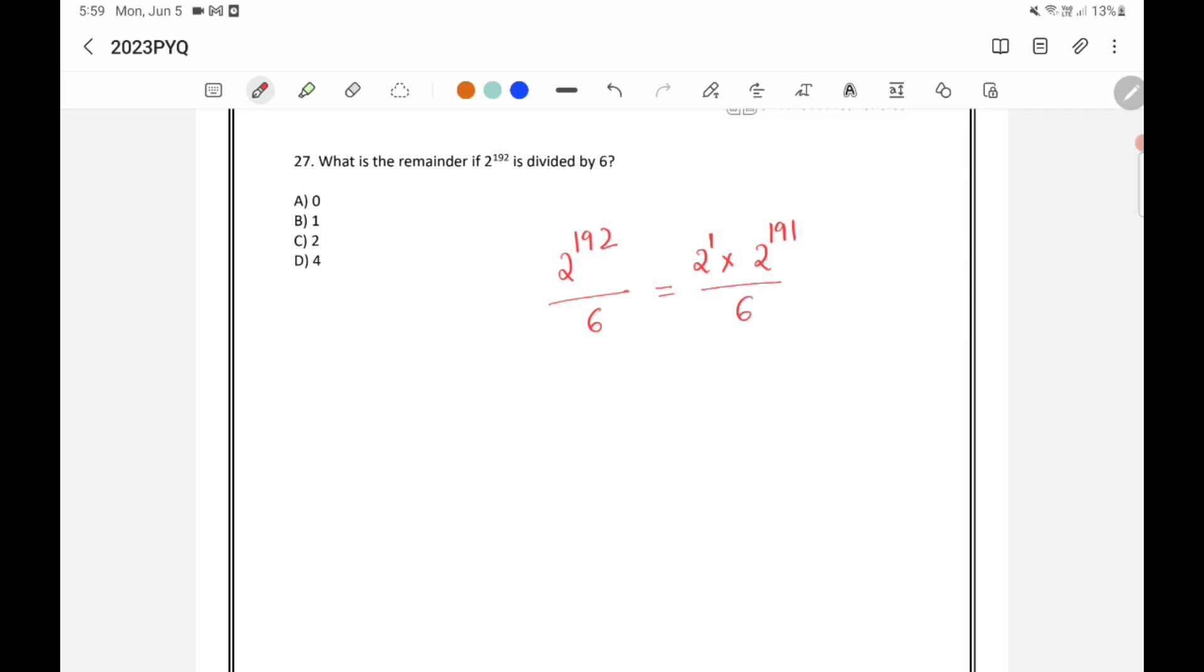So why I did like that? Because in 6 and 2, 2 is a common number. We can cancel 2 on both numerator and denominator. So for that I have taken 1, 2 outside.